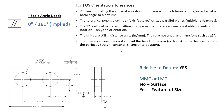If we needed both location and orientation, we would use position — position does both. Orientation tolerances only orient; they will not locate. The units are still in distance units — inches or millimeters — not angular dimensions like plus or minus five degrees. And the last bullet: the tolerance zone does not control the bend in the axis, so no form control here. When parallelism is on a surface, it does inherently control flatness because the tolerance zone is identical to flatness — two parallel planes. But for a feature of size, it's not controlling form, only the orientation of the perfectly straight center axis.